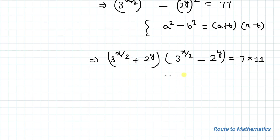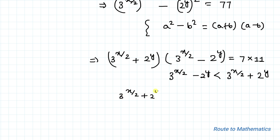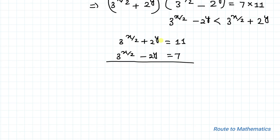Since 7 and 11 are prime, and 3^(x/2) + 2^y must be greater than 3^(x/2) − 2^y, we assign: 3^(x/2) + 2^y = 11 and 3^(x/2) − 2^y = 7. Adding both equations, the 2^y terms cancel, giving 2 × 3^(x/2) = 18.